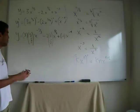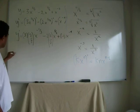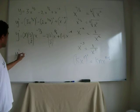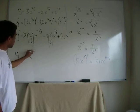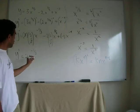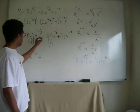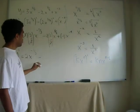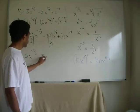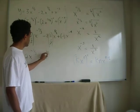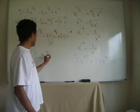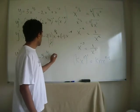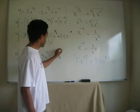And now we just simplify y-prime. Three times two-thirds, three goes away, so we have two, x minus one-third. Minus two times five-halves, cancels two, so we have five x three-halves, plus minus is minus three x minus four.